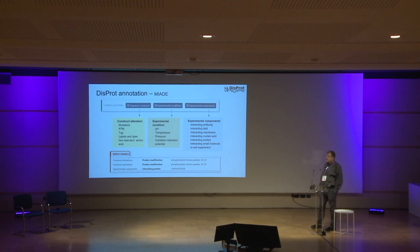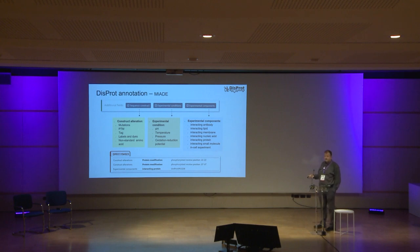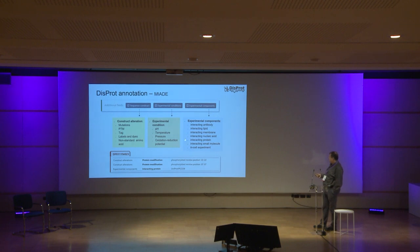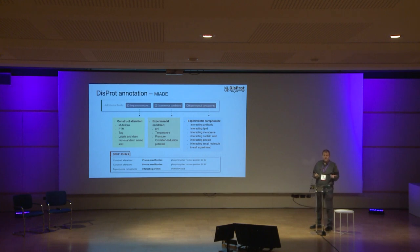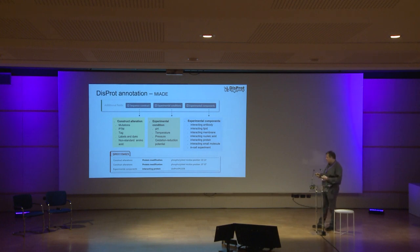For experimental conditions, DisProt previously only captured disordered regions under physiological conditions, but now we can explicitly encode pH, temperature, pressure, and oxidation-reduction potentials — important because changing pH or temperature can yield different results for disordered regions. For experimental components, we now capture whether there is an interacting antibody, lipid, membrane, nucleic acid, protein, small molecule, or in-cell experiment, since these can influence the presence or absence of disorder, including regions that undergo folding-upon-binding events where contradictory results may appear across publications.